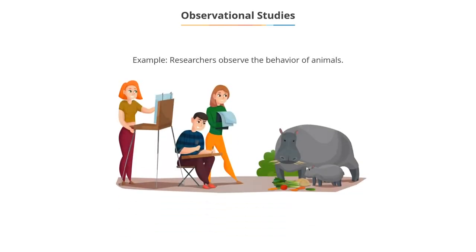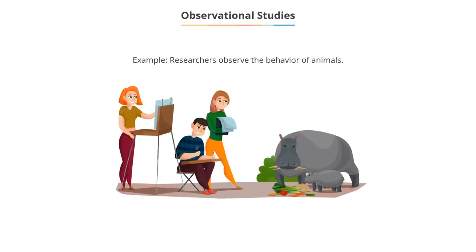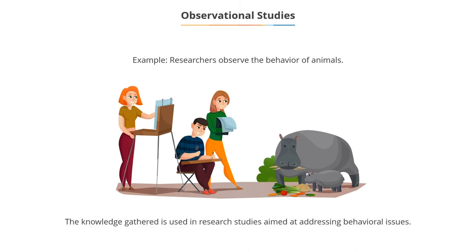Observational studies. A researcher, for example, may observe the behavior of animals in a natural setting. This has helped to gather knowledge on animal behavior, which can be used in research studies to address behavioral issues and act accordingly.